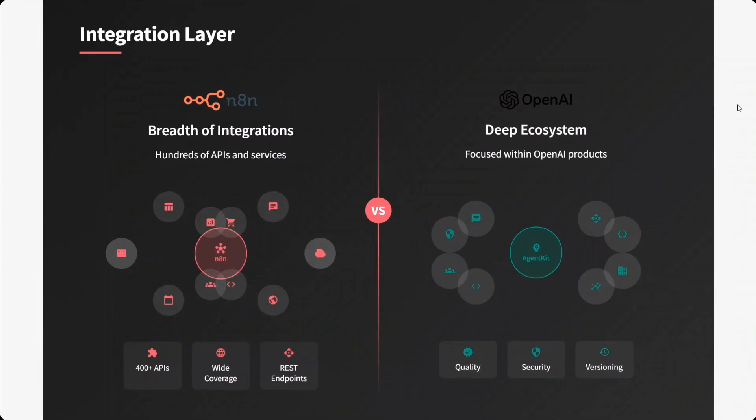On the integration layer, the breadth of integration in n8n is huge — it can connect you with hundreds of APIs and services: 400+ APIs, wide coverage, REST endpoints are also there. While in the case of OpenAI Agent Kit, it is mostly focused towards OpenAI products only, so it is narrower compared to n8n.